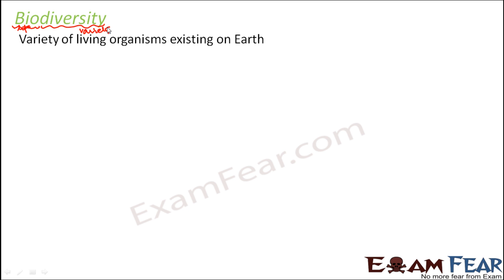Biodiversity can happen at many different levels. Whenever we talk about variety of living organisms, those organisms belong to different varieties because they have differences amongst each other. These differences can arise due to many reasons. One reason could be differences in the genes, and that is where we talk about genetic diversity — the variety of living organisms which exists due to differences at the genetic level.